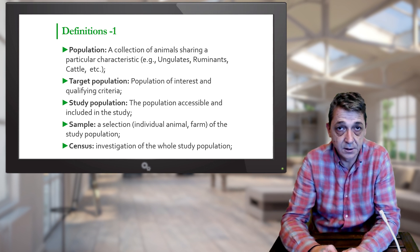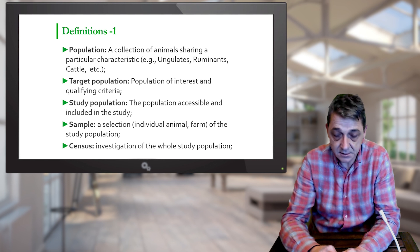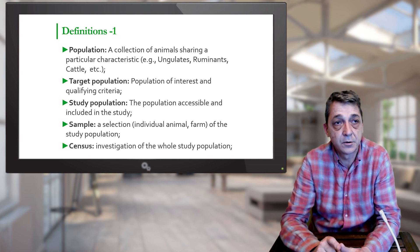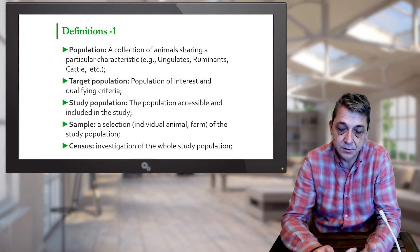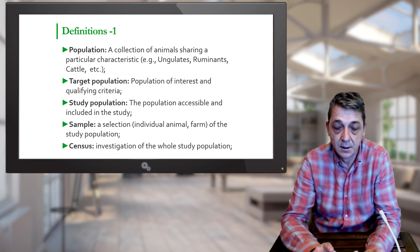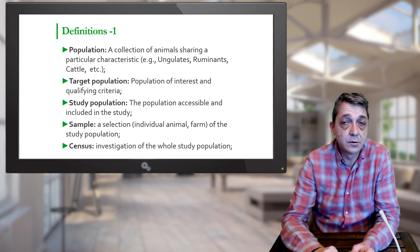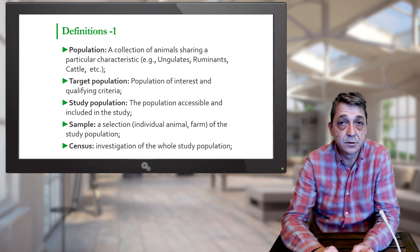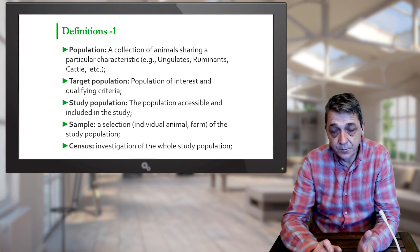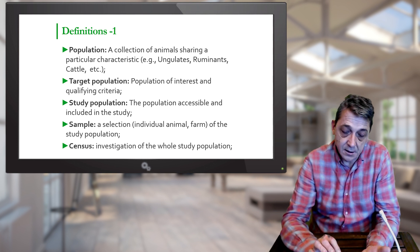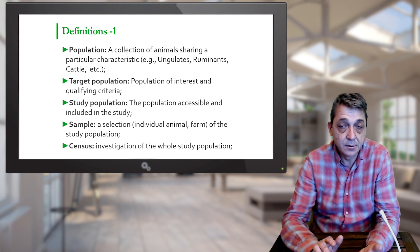Because all of them could harbor and transmit the disease. This includes domestic animals which produce food, domestic animals which are used for draught or for labor, pets, wild animals and so on. Another example: if we talk about anthrax, then the population is narrower. We are talking about ungulates, or draught and labor animals, and animals which produce food. In this group would come horses, cattle, sheep and goats, and pigs.